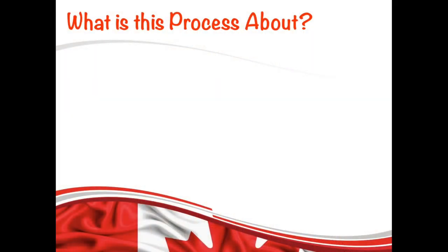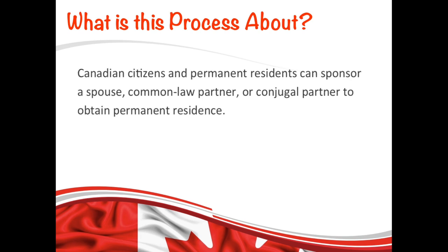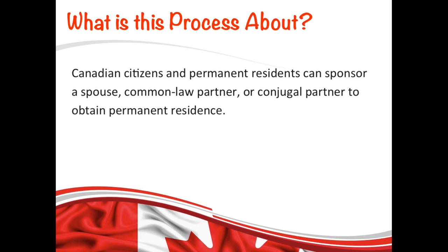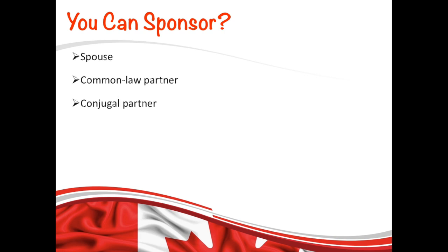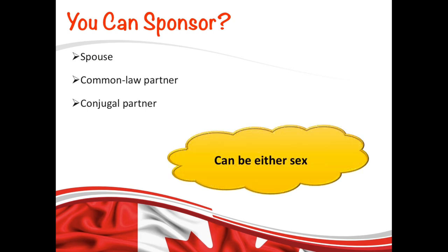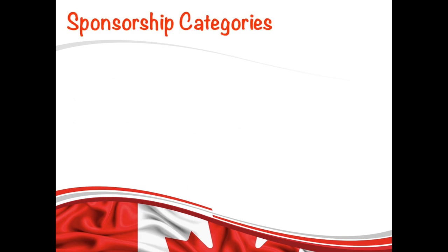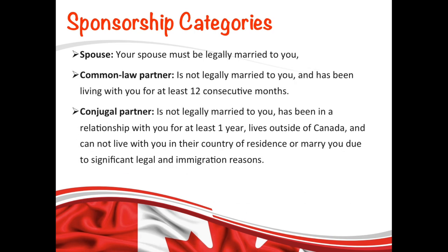Now let's talk about what this process is about. This is a process by which Canadian citizens and permanent residents can sponsor their spouse, common-law partner, conjugal partner, or dependent child to get permanent residence. Same-sex partners can also apply under one of these three categories as long as they meet all of IRCC's eligibility criteria. If you are not sure what category your relationship falls under, you should go through these definitions to understand what category you should apply to.